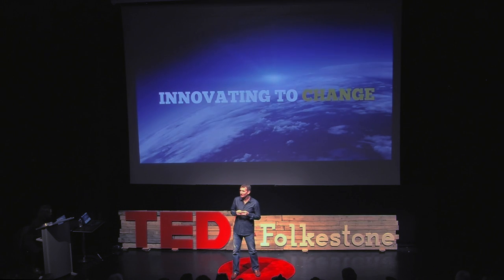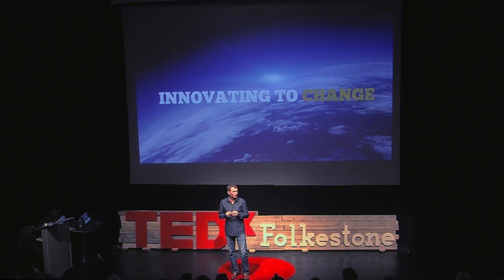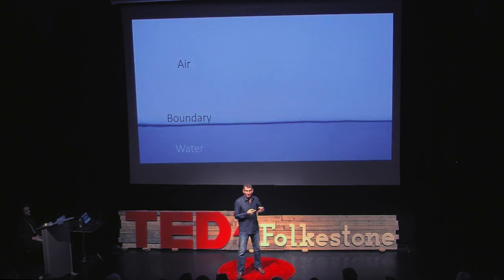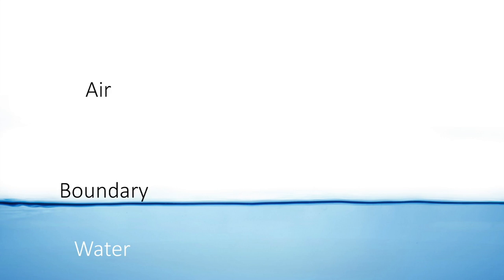How can we create change? Well, we've all heard that we have to push the boundary. But what exactly is the boundary? According to science, a boundary is where everything happens — it's where all the activity of change occurs. But what does it look like? To demonstrate, I decided to use water. Here we can see we've got the body of the water and the surface of the water. That's the boundary.